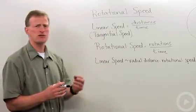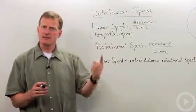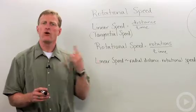One of them is a linear speed, which is also called the tangential speed. And that's basically the distance the object is moving over time.